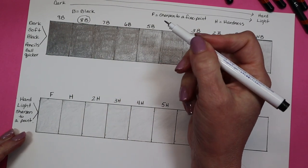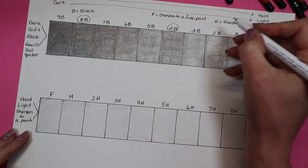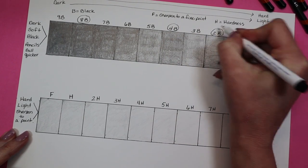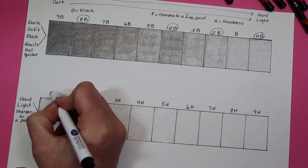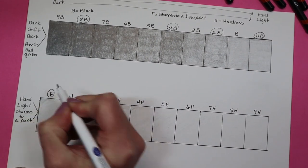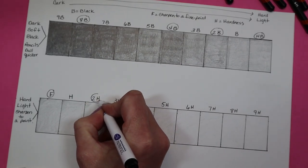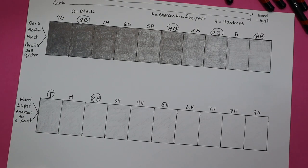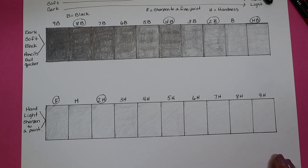Now my favorite pencils are an 8B, a 4B, a 2B—remember school, we used 2B pencils—an HB, an F for sharpening to a fine point, and I usually use a 2H. Now those just happen to be the ones that I'm reaching for most of the time, but you might have your own preference.